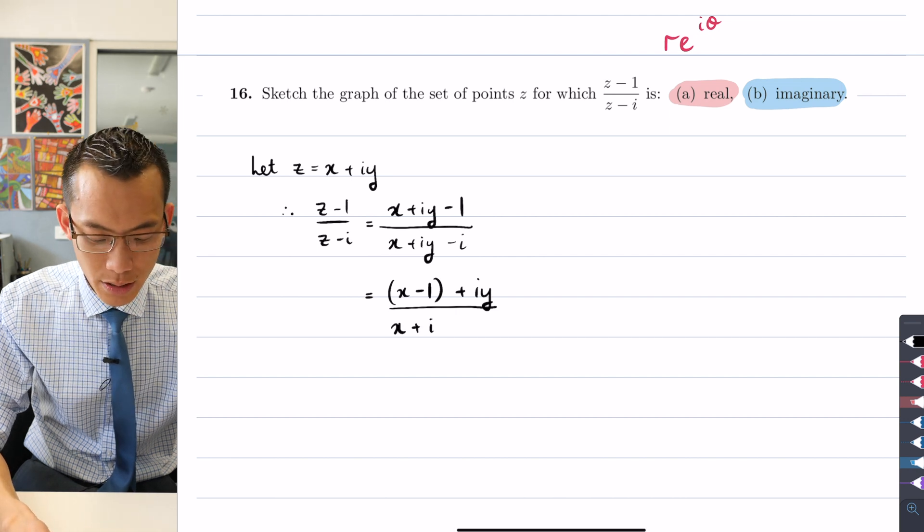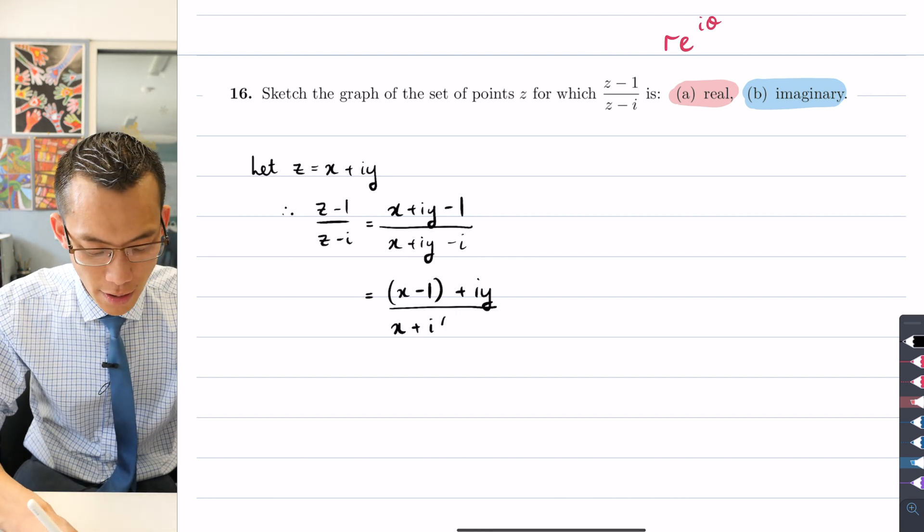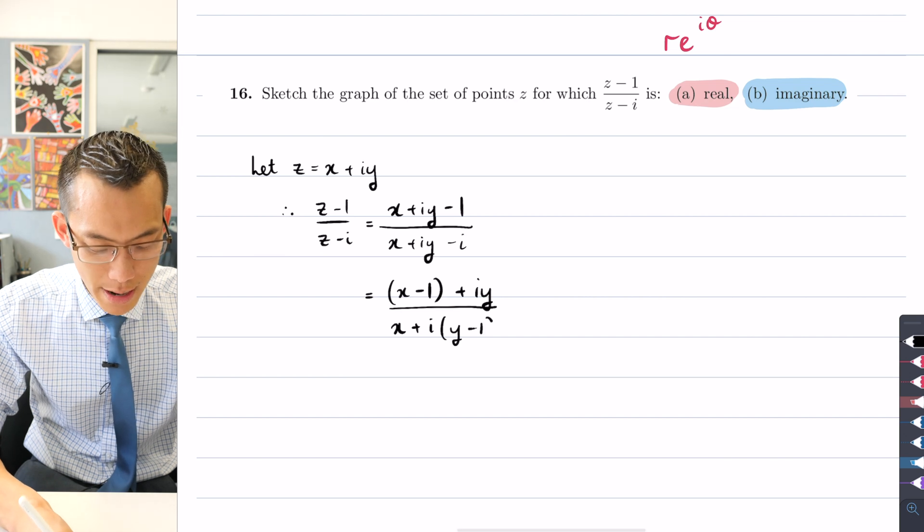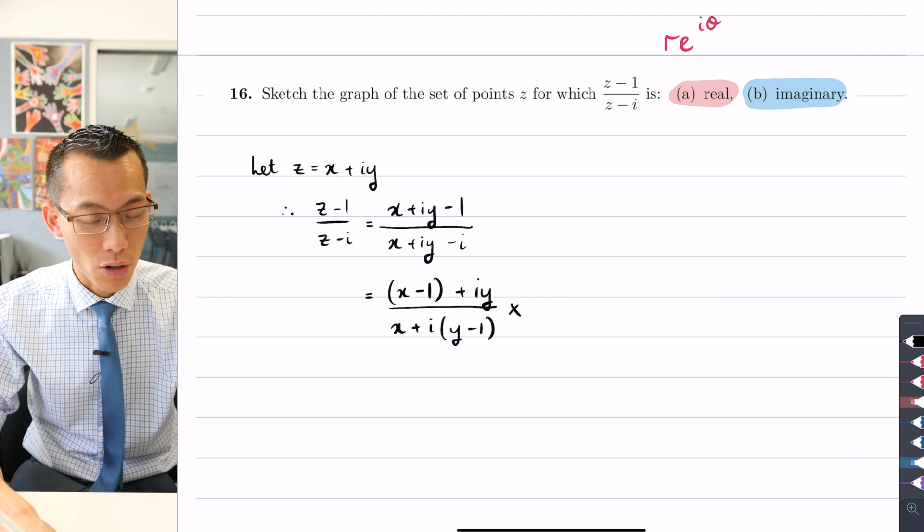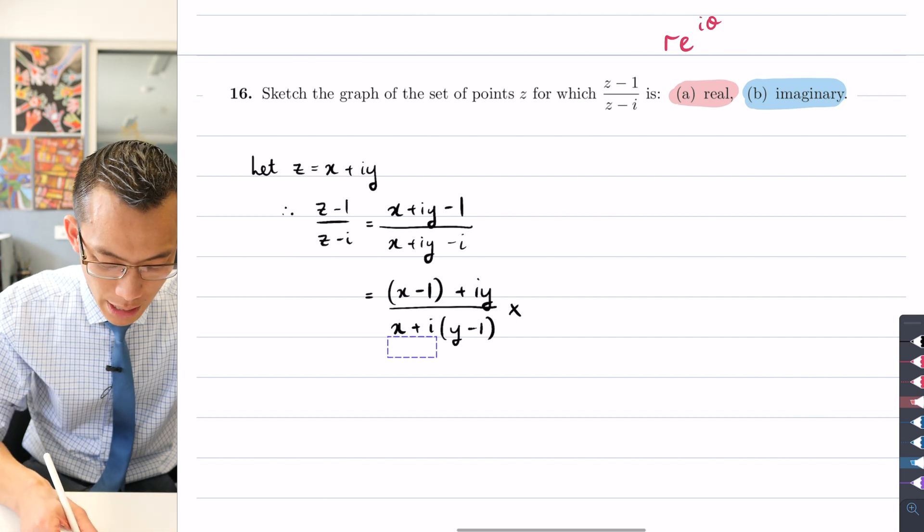And then everything that has an i attached to it is going to be the imaginary component, and you can see if I factorize that out I get (y - 1).